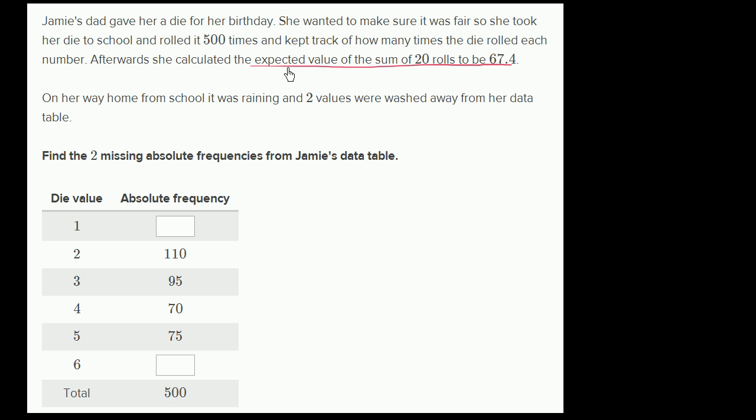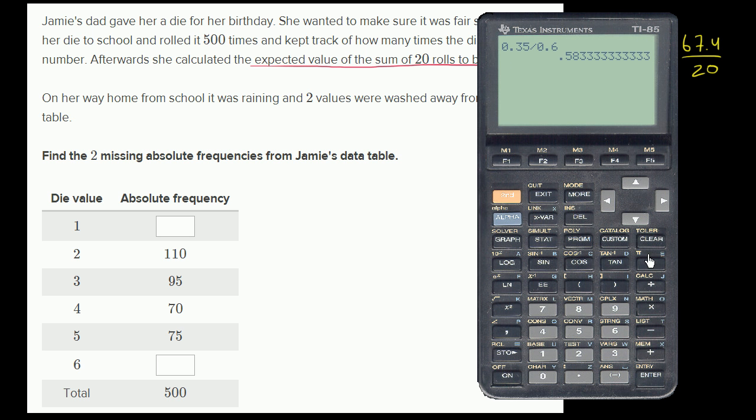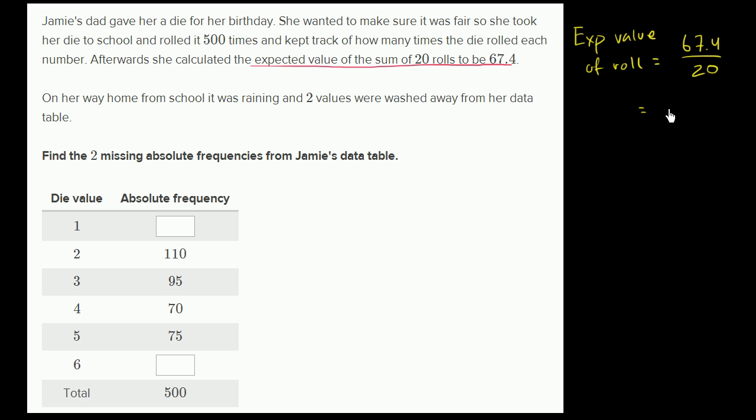So first, let's think about what this expected value, the sum of 20 rolls being 67.4 tells us. That means that the expected value of one roll, the expected value of the sum of 20 rolls is just 20 times the expected value of one roll. So the expected value of a roll is going to be equal to 67.4 divided by 20. We can get our calculator out. So we have 67.4 divided by 20 is 3.37. So this is equal to 3.37.